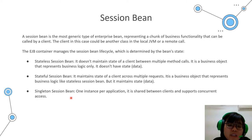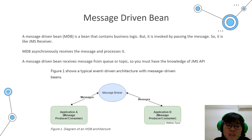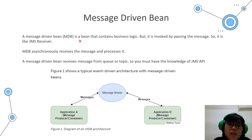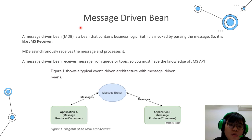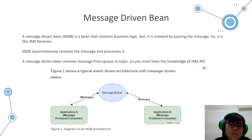Singleton session beans contain only one instance per client. The second type is the message driven bean (MDB). MDB is a bean that contains business logic but is invoked by a messaging system passing a message, so it acts like a JMS receiver. Therefore, to use a message driven bean, you need knowledge of the JMS API. Here is a figure showing the architecture with a message driven bean.